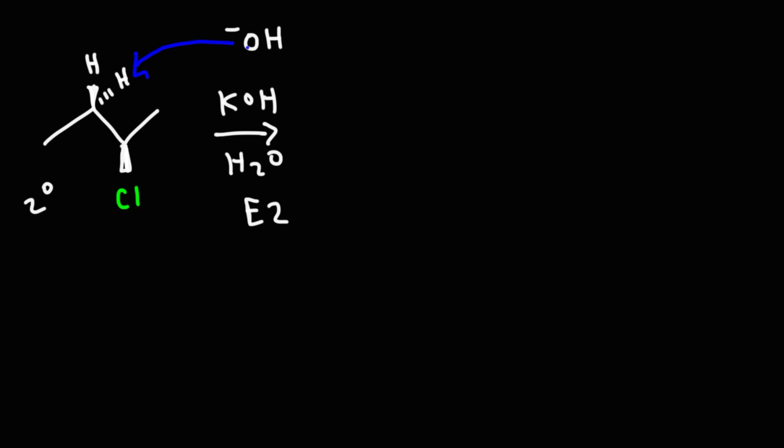As the hydroxide grabs the proton, this carbon-hydrogen bond is going to break. While this bond is breaking, a pi bond is forming between these two carbon atoms. A double bond is about to form there. And while that's happening, the carbon-chlorine bond is breaking at the same time simultaneously. So these two bonds are breaking apart at the same time this double bond is forming.